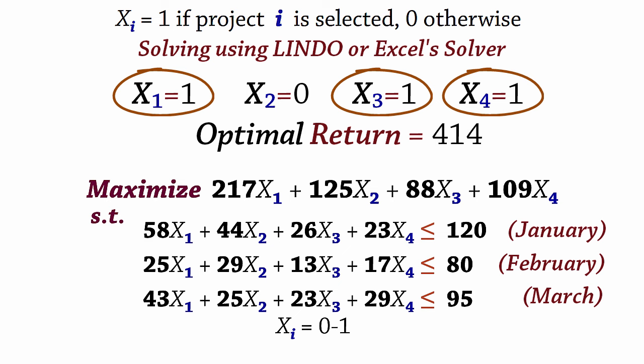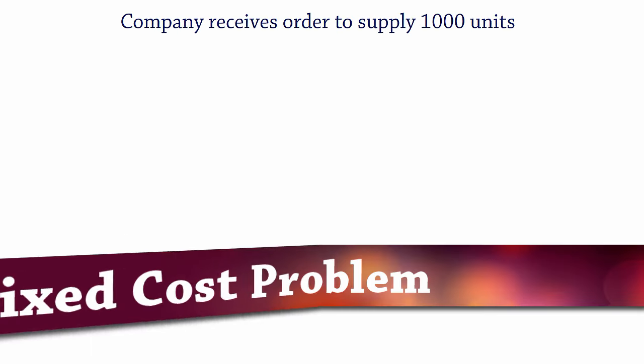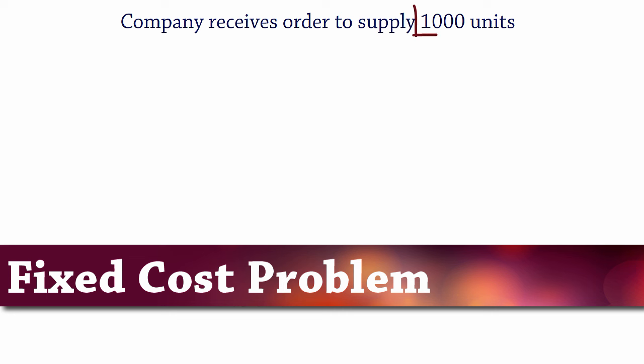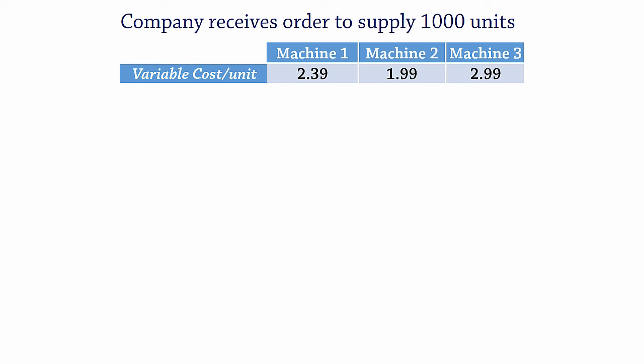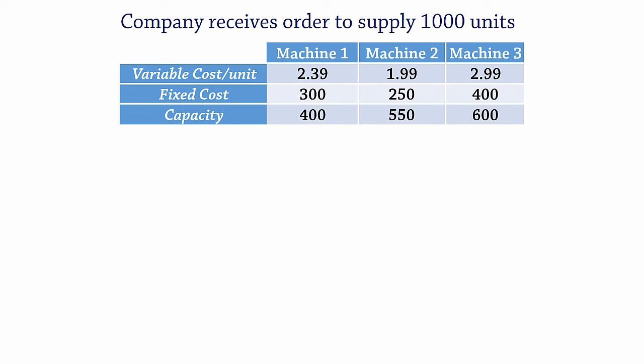Let's now model a fixed cost problem. Suppose a small company receives an order to supply 1000 units of a product. The company has 3 machines that can be used to produce the product. Here are the variable cost per unit produced from each machine, here are the fixed costs, and here are the machine's capacities. Our objective is to minimize total costs. We're going to need two types of decision variables in this case. One set for the number of units produced from each machine, and because of the fixed costs, another to indicate whether a machine is being used or not.